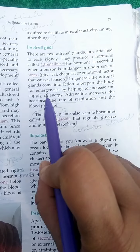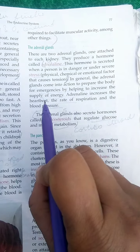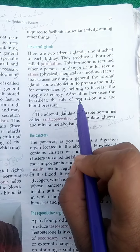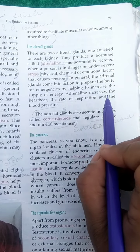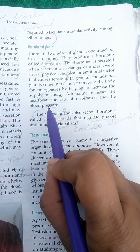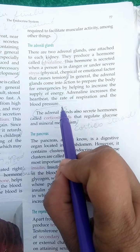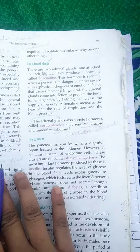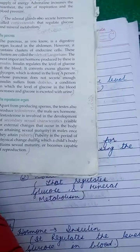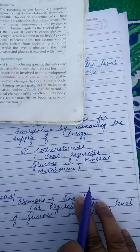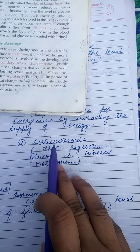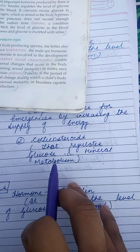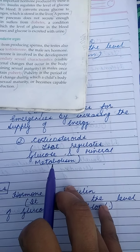Generally, the adrenal gland comes into action to prepare the body for emergency. Adrenaline increases the heartbeat, the rate of respiration, and the blood pressure to decrease the anxiety. The adrenal gland also secretes the hormone known as corticosteroids, which regulates glucose and mineral metabolism.